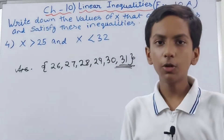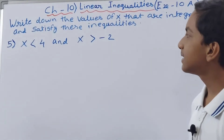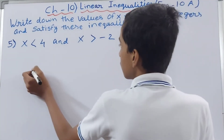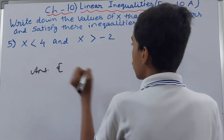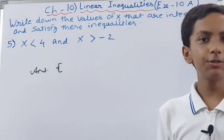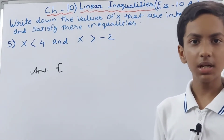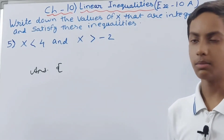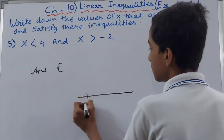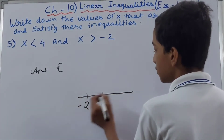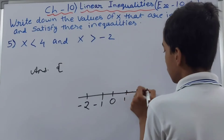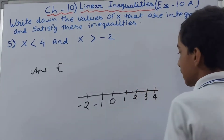The next part: x is less than 4 and x is greater than minus 2. We open the curly brackets. Since we have a negative number, if you are getting confused, make a number line. On the number line: -2, -1, 0, 1, 2, 3, 4. X has to be less than 4 and more than minus 2.